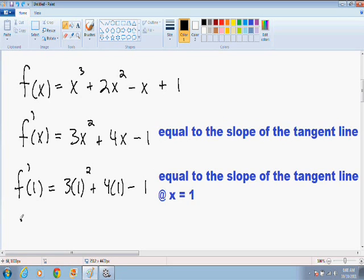If we add all these terms together, we find out that the slope of the tangent line at x equals 1 is just 3 times 1 squared, which is 3, plus 4 times 1, which is 4. 3 plus 4 is 7, 7 minus 1 is 6. So the slope of the tangent line at x equals 1 is 6.